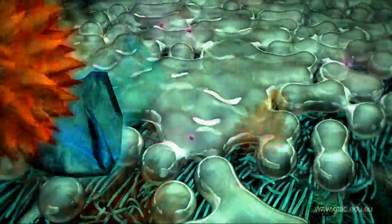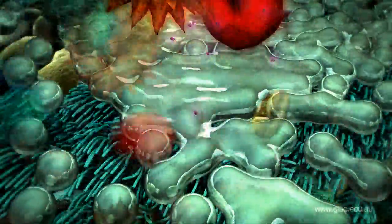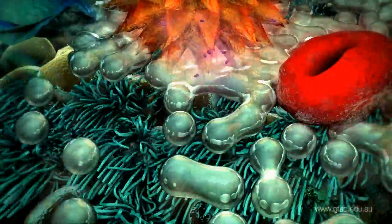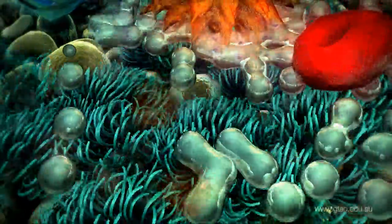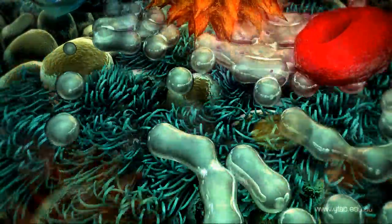The mucus forms a blanket over the tips of the cilia. It traps dust, pollen, and microbes. The cilia mechanically remove this debris by brushing it up and out of the airways.